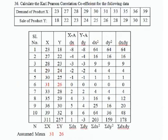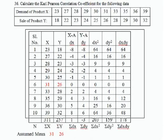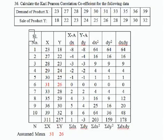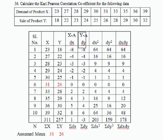Let us do the sum. Draw 8 columns: the first column for serial number, second column for X, third column for Y, fourth column for X minus assumed mean A denoted by dx, next column for dy (Y minus A), then dx², then dy², and the last column for dx·dy.